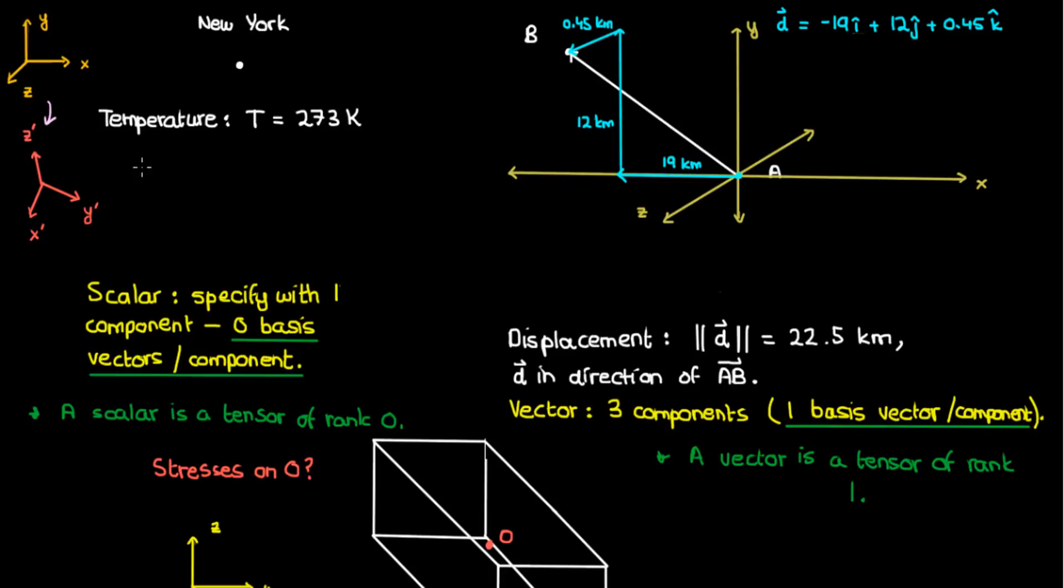Temperature is a scalar, so it's obviously going to be completely separate from our coordinate system. No matter what coordinate system we use to measure position, the temperature in New York will stay the same, whether I have this primed coordinate system, the old coordinate system, or any other coordinate system. The temperature will be invariant when we change coordinates.